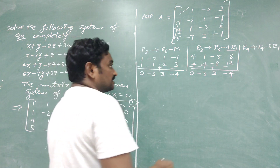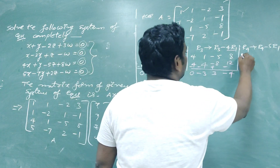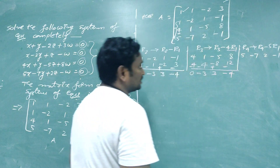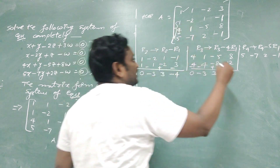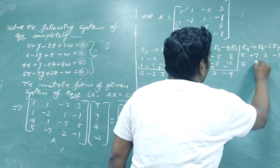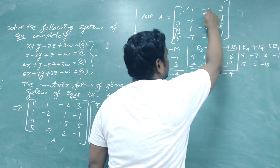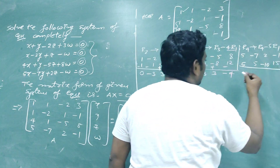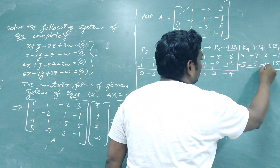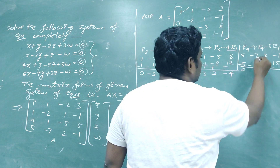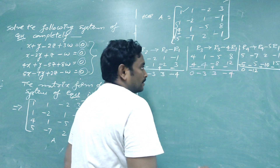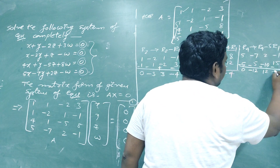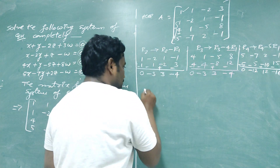For the last row, write R4 as 5, -7, 2, -1, then compute 5×R1 = 5, 5, -10, 15, and subtract. So: 5-5=0, -7-5=-12, 2+10=12, -1-15=-16. The new R4 becomes 0, -12, 12, -16.